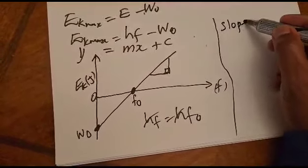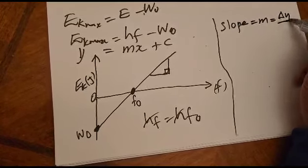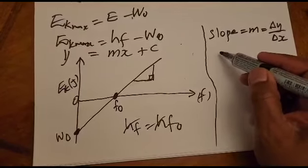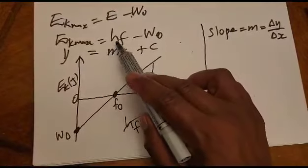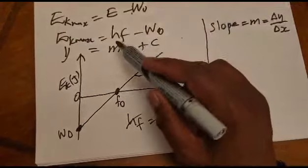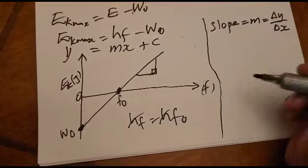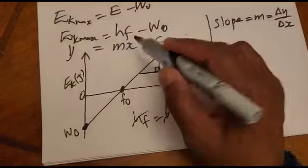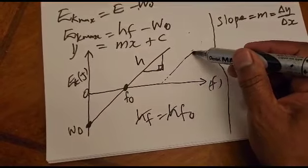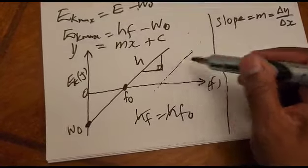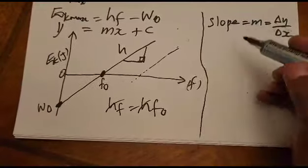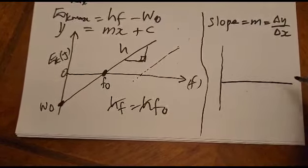The slope of this graph equals Δy/Δx, which represents Planck's constant h. If a second metal is plotted, the two graphs will be parallel because the slope represents the same constant — Planck's constant — for all metals.